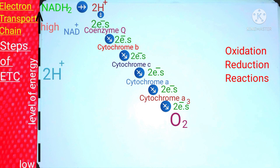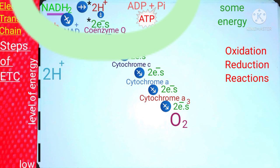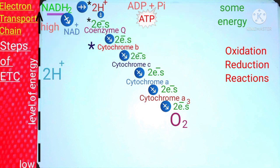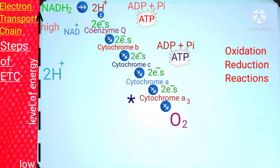When NADH2 is converted to NAD ion, it releases two hydrogen ions, two electrons, and enough energy to combine ADP with inorganic phosphate, resulting in the formation of ATP. The first ATP molecule is synthesized between NADH2 and coenzyme Q. As electrons pass to cytochrome B and then cytochrome C, the energy of the electrons is again lowered and utilized to synthesize a second ATP from ADP plus inorganic phosphate.